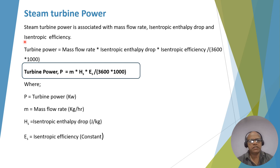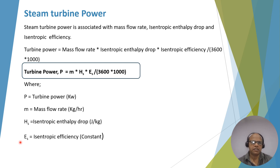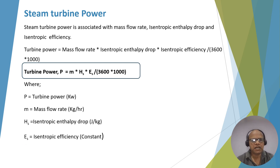Steam turbine power is associated with the mass flow rate, isentropic enthalpy drop, and isentropic efficiency. The turbine power formula is: P = (M × Hs × Es) / (3600 × 1000), where P is turbine power in kilowatts, M is mass flow rate in kg per hour, Hs is isentropic enthalpy drop (total enthalpy drop across each stage), and Es is isentropic efficiency.